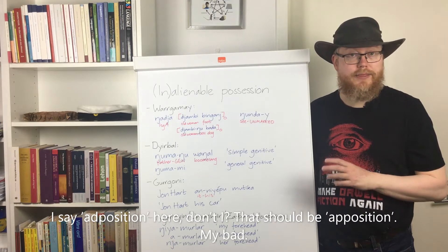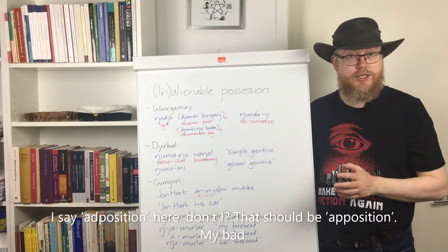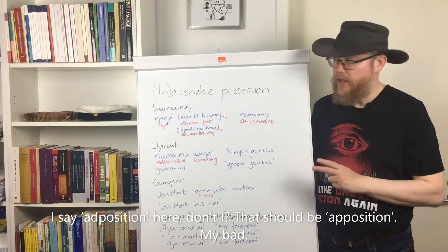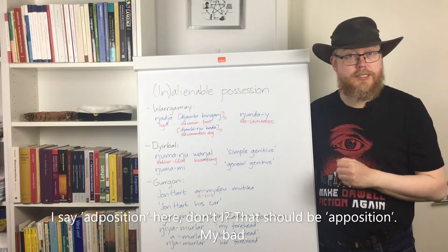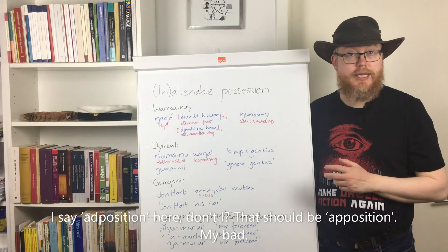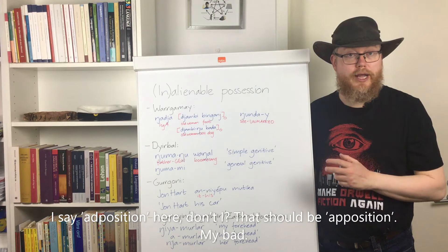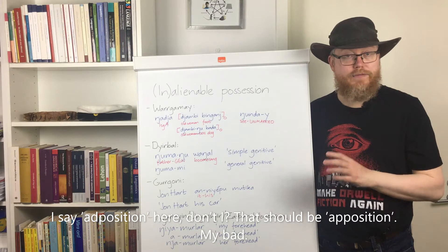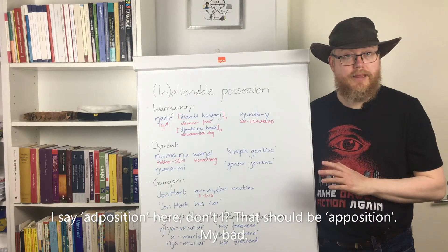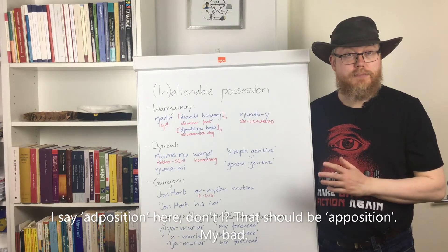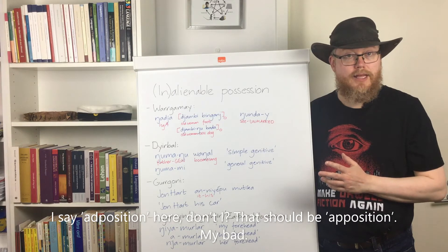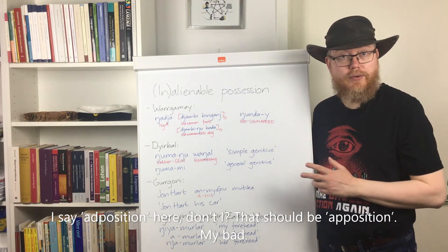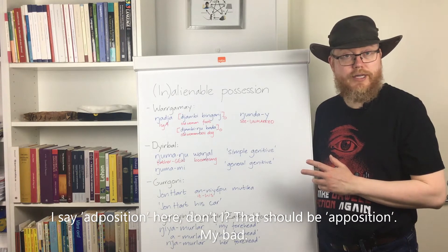For this video I have looked at the bigger picture — what is the situation like in Australia as a whole when it comes to expression of possession. I have been reading Dixon, that would be Professor R. M. W. Dixon, who probably is the most important person within Australianist linguistics during the second half of the 20th century, and as of the making of this video he is still alive. Dixon has read much of what has been written about Australian languages, and he concludes that in Pama-Nyungan languages you generally find two different genitive constructions.